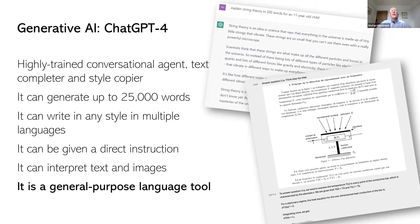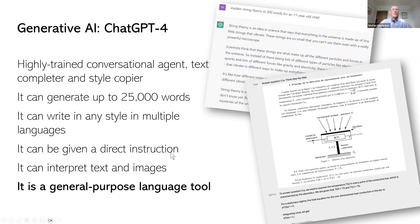It can now generate up to 25,000 words — that's an entire dissertation. It can write in any style in multiple languages. It can be given a direct instruction, such as explain string theory in 200 words for an 11-year-old child. It can interpret text and images.